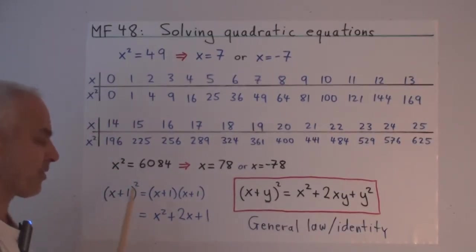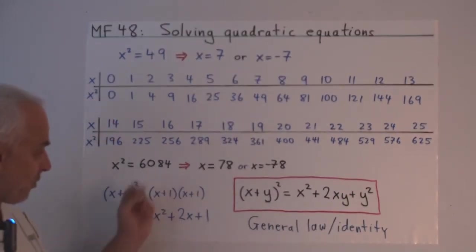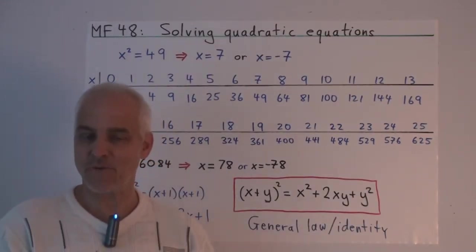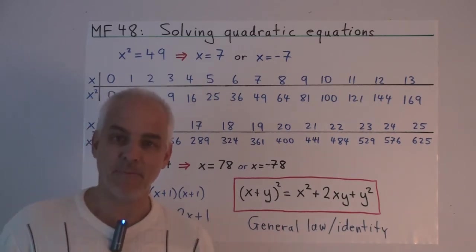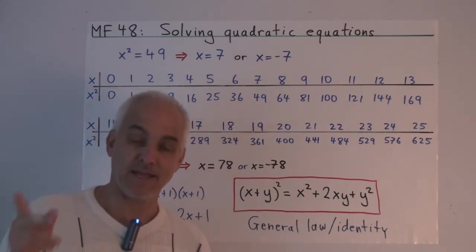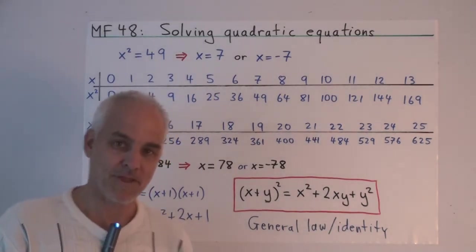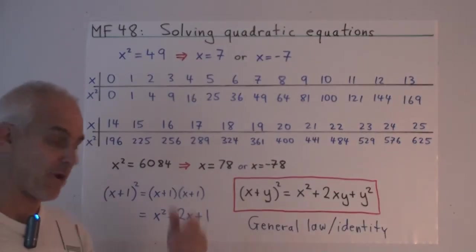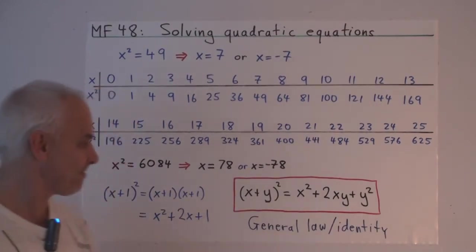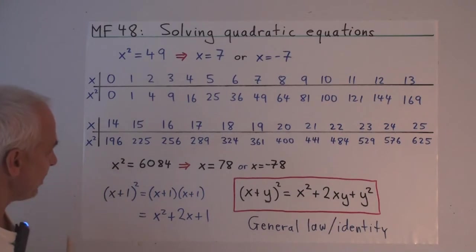But what if we're given a bigger equation like x squared equals 6084? How did I get 6084? Well, I took the number 78 and I squared it. So this is an easy way of generating a quadratic equation. You take some number, you square it, and then you give your friend this equation. Say, well, what is x squared equals blah, blah, blah, your number? You know because you've taken a number and squared it, but for him to unravel that operation might be a little bit tricky.